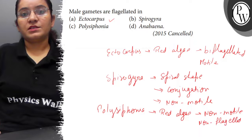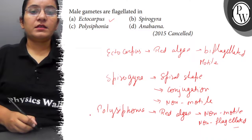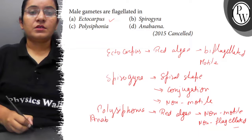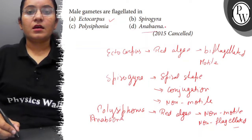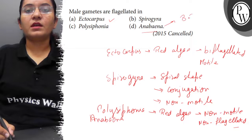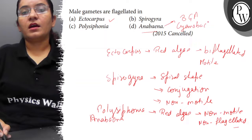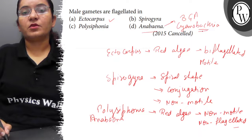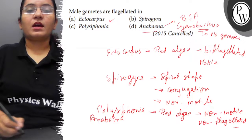There will be no flagella in Polysiphonia. The fourth option is Anabaena. Anabaena is a BGA — blue-green algae — that is, cyanobacteria. Cyanobacteria, or bacteria, never produce gametes, so gametes will not be formed here at all.